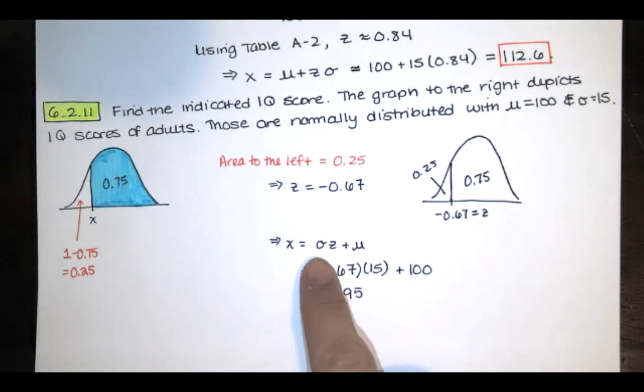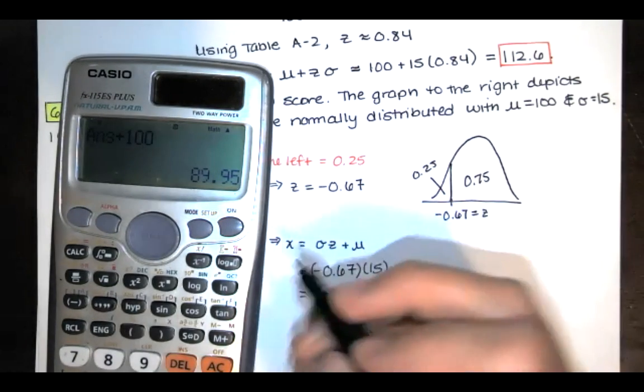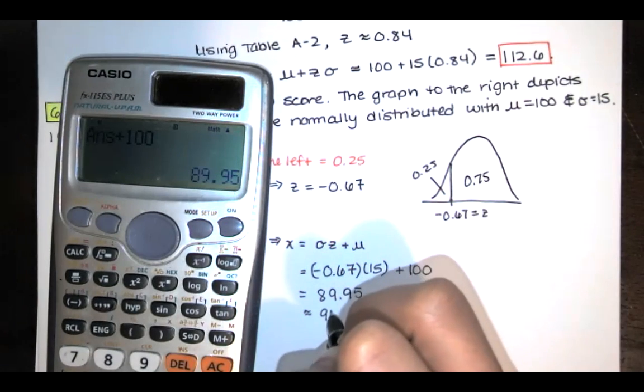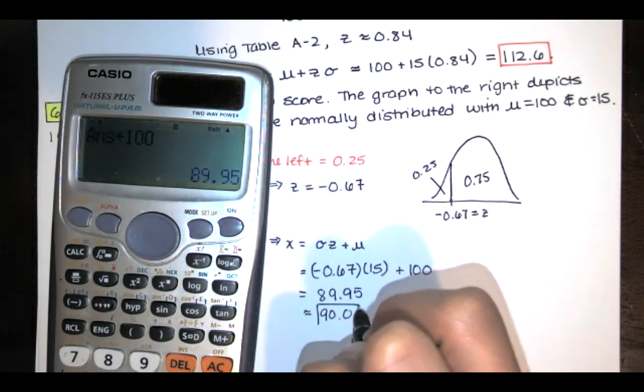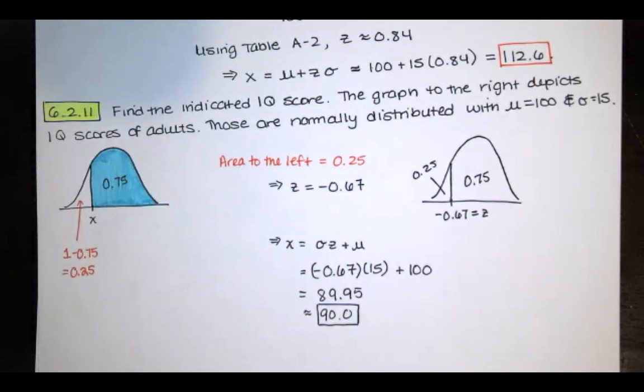And then from there, you just take the z, multiply by the standard deviation and add the mean to get x. And you can use Excel as your calculator for this, or you can just use a handheld calculator like I do, and you're going to get the same result. And then be sure to round to whatever number of decimal places MyLab Statistics wants. So make sure you read that fine print. It's usually in blue on the MyLab Statistics website.